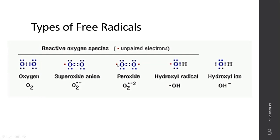Peroxide is also a free radical because it has two unpaired electrons. The hydroxyl radical again has one unpaired electron in the oxygen part. The hydroxyl ion, however, is not a free radical because it does not have an unpaired electron. These are the different types of free radicals. Is the concept of the unpaired electron clear from a science point of view?